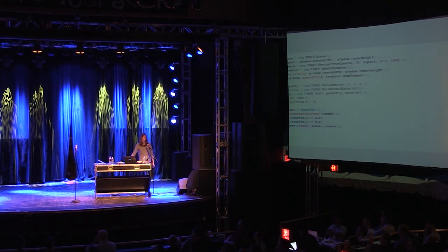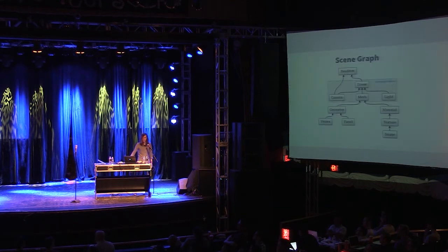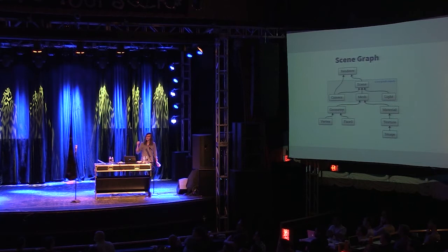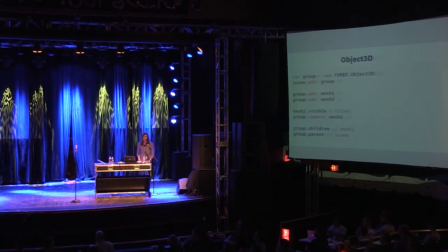An easier way to visualize how all of these things work together is with this node map. The geometry is made up of vertices and three-sided polygons or triangles. You add the geometry and the material to the mesh. The mesh is a scene graph object along with the camera, lights, and the scene itself — and the scene is the root of the scene. Object3D is the base class for scene graph objects, so cameras, meshes, and lights are all Object3D, and you have to add them to the scene for them to show up.